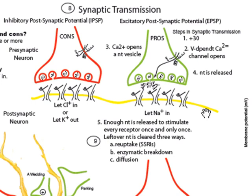When the neurotransmitter binds to those ligand-gated channels, they open up, and in this case they let sodium in. Over here, in the case of the IPSPs, they let chloride come in or potassium leave.